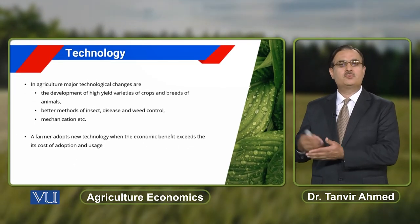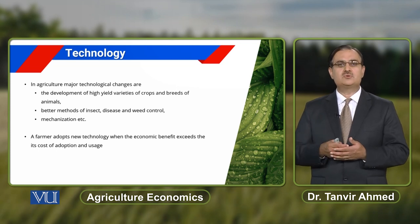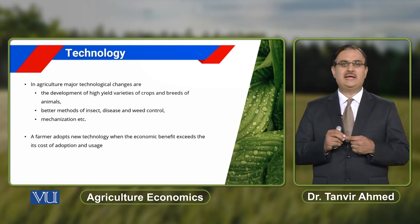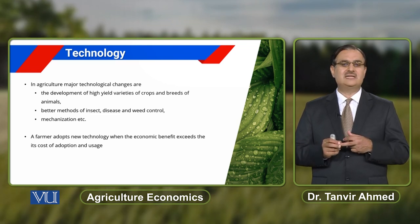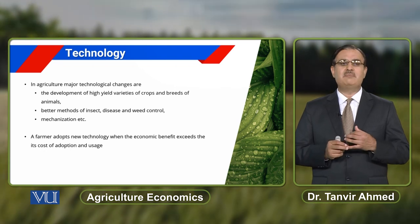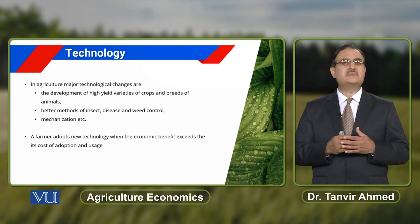If there are better methods to control insects and disease, again there is improvement in output of the agricultural sector. Mechanization also results in improvement in the production function. Farmers are in a position to produce more output even with the same amount of resources, because of improvement in yield varieties, better methods to control insects, weeds and diseases, and mechanization.